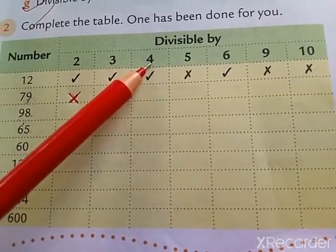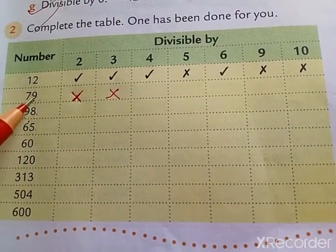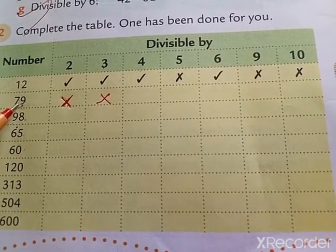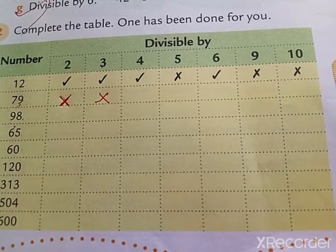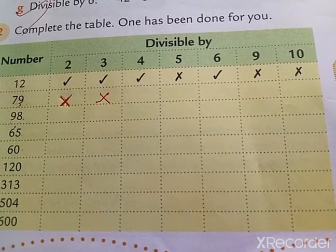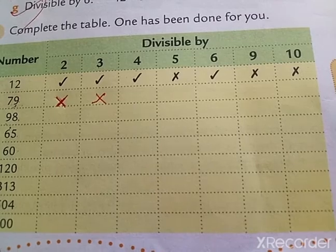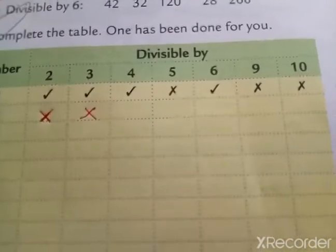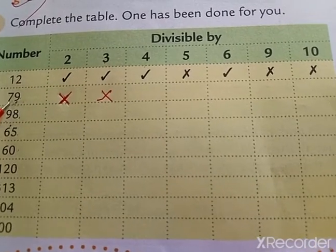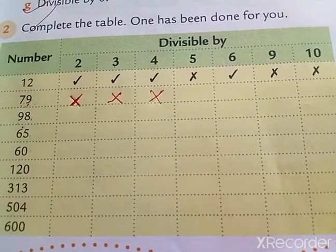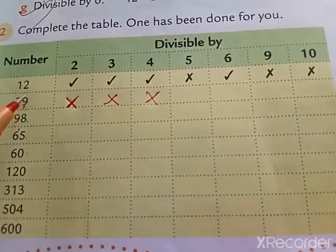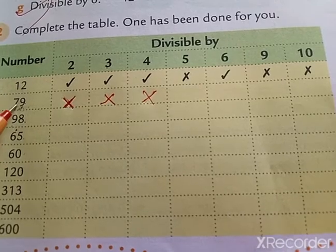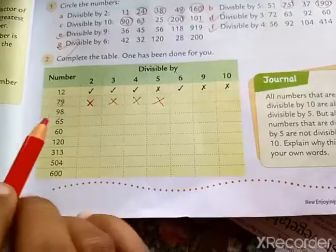Now we have to check the divisibility of 4 in 79. We have to check the last 2 digits of this number whether it is divisible by 4. Since it is a 2-digit number, we have to divide 79 by 4 and see whether it is a complete division. When you divide 79 by 4 it will not be a complete division — that is, the remainder will not be 0. So this is also not divisible by 4. Then we check divisibility by 5 — the last digit is not 0 and not 5 either. So 79 is not divisible by 5. I have crossed it.